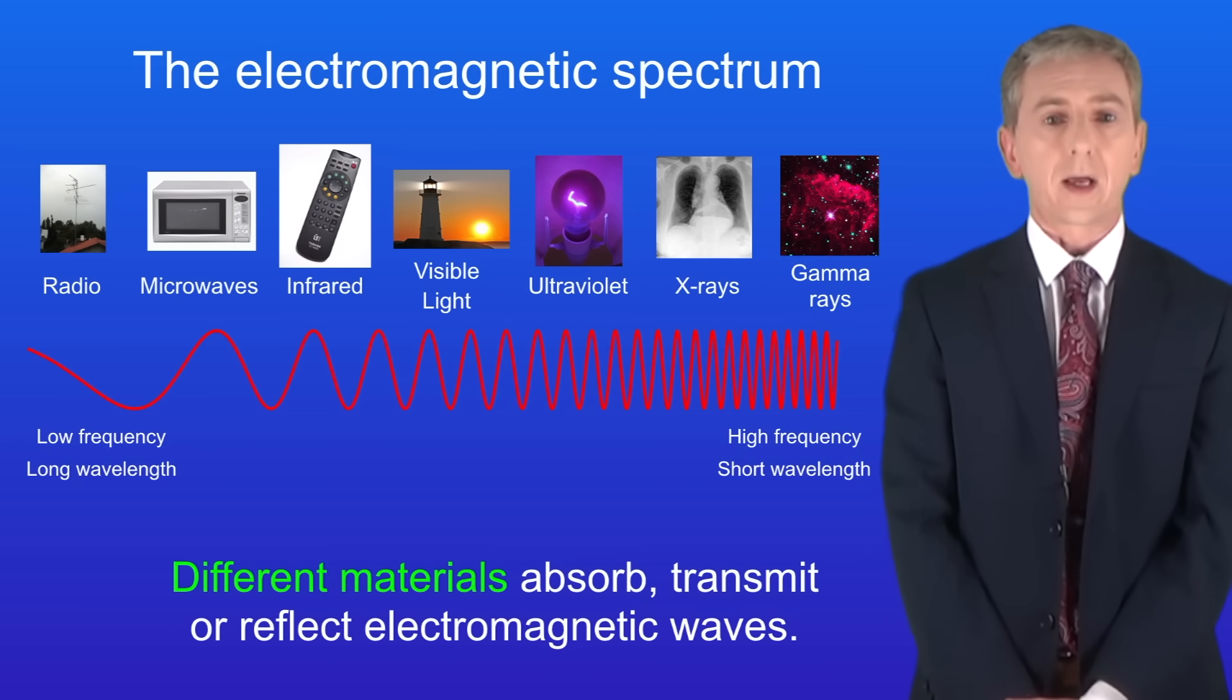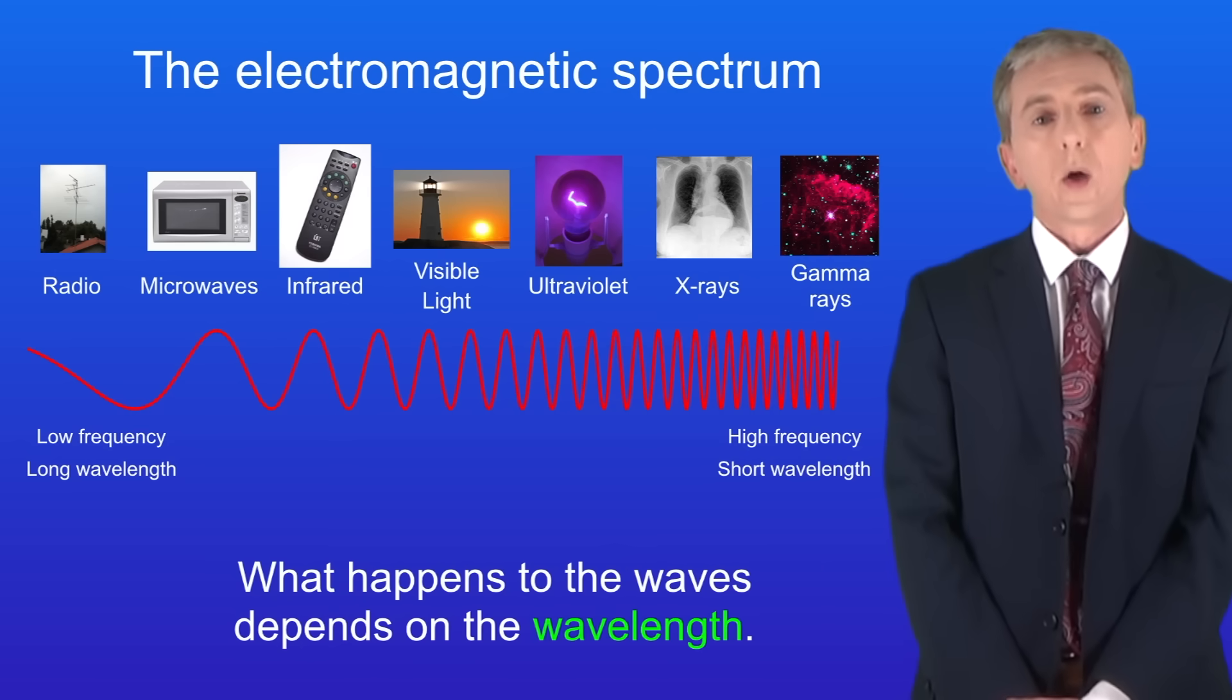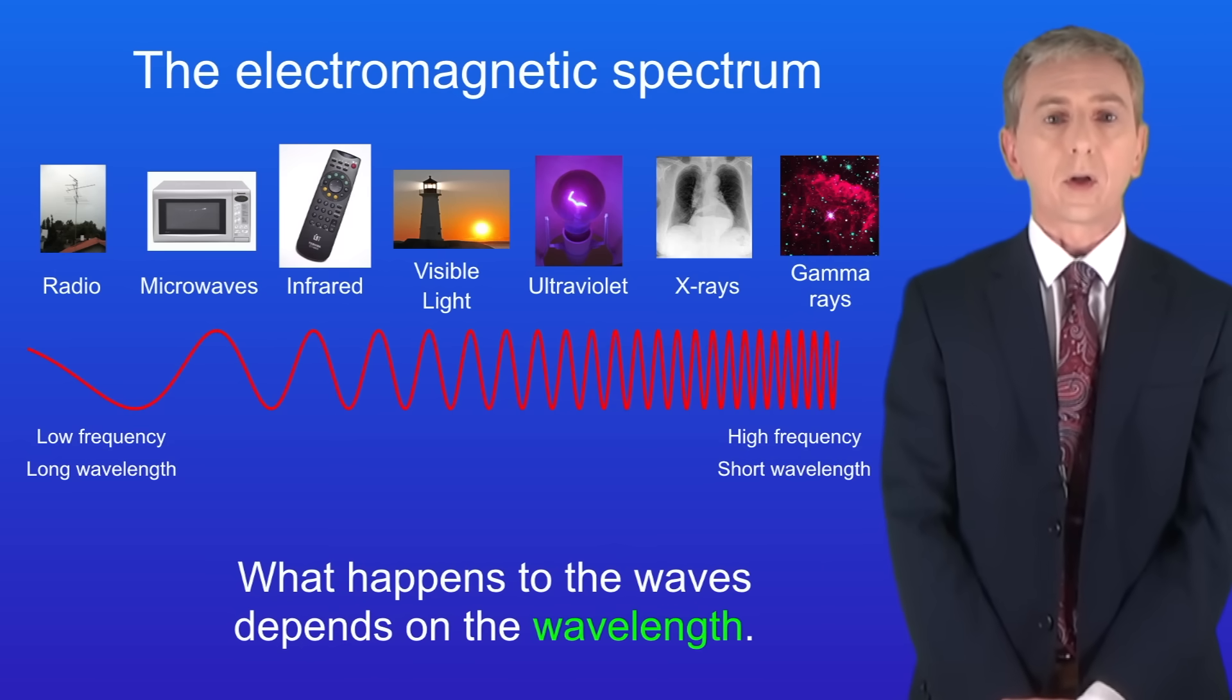Now a key idea that you need to understand is that different materials absorb, transmit or reflect electromagnetic waves. What happens to the waves depends on the wavelength. And we saw a good example earlier.